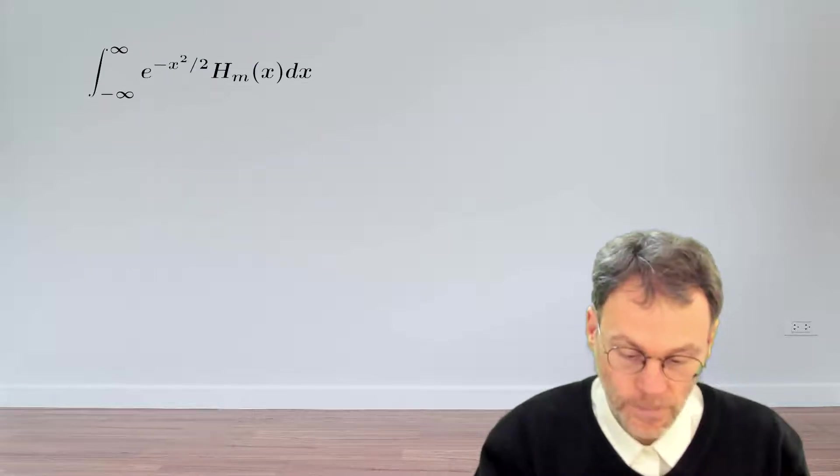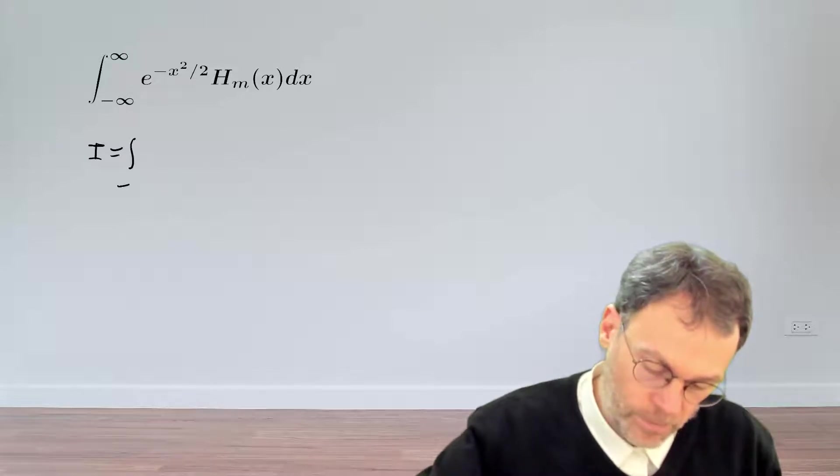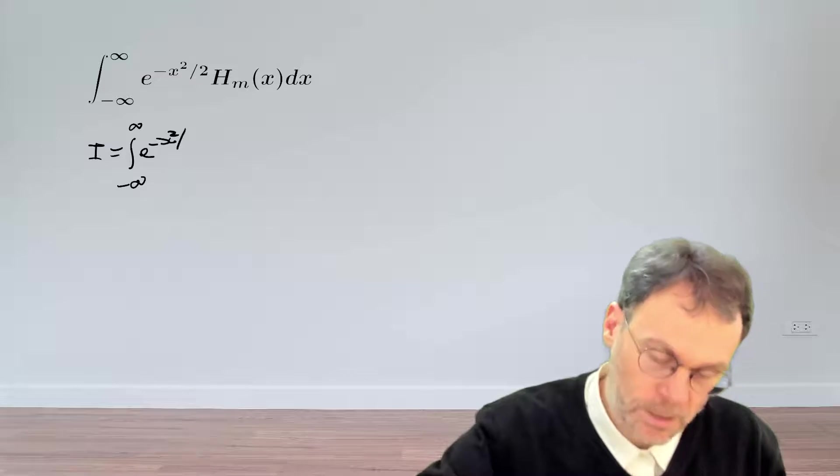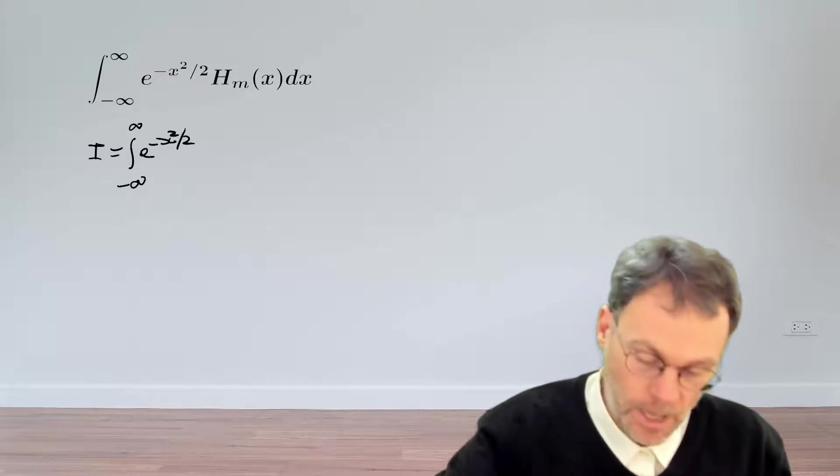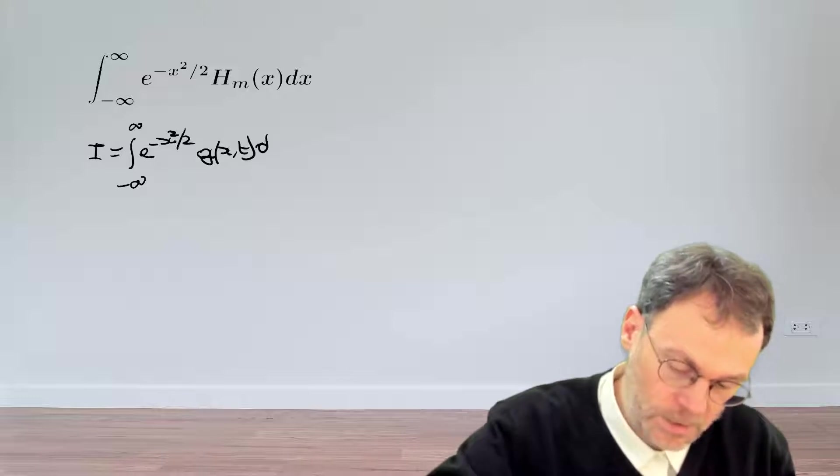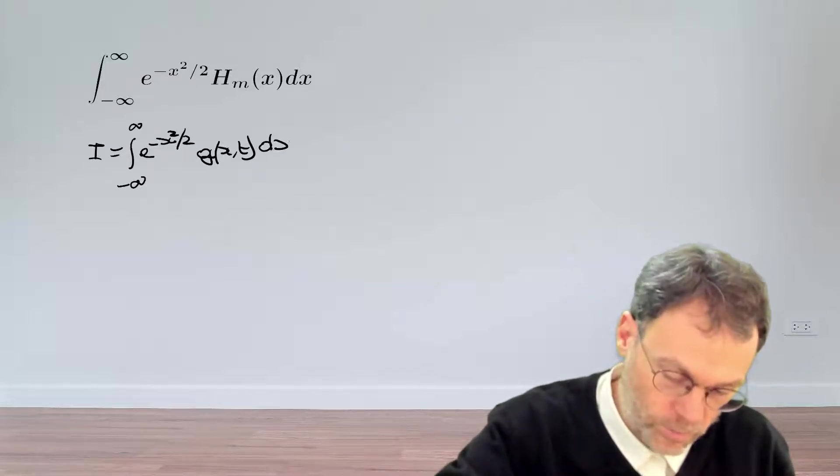The integral that we need to calculate is an integral from minus infinity to plus infinity exponential minus x squared over 2 and then multiplied by our generating function of x and dx. So we're going to integrate this over x.